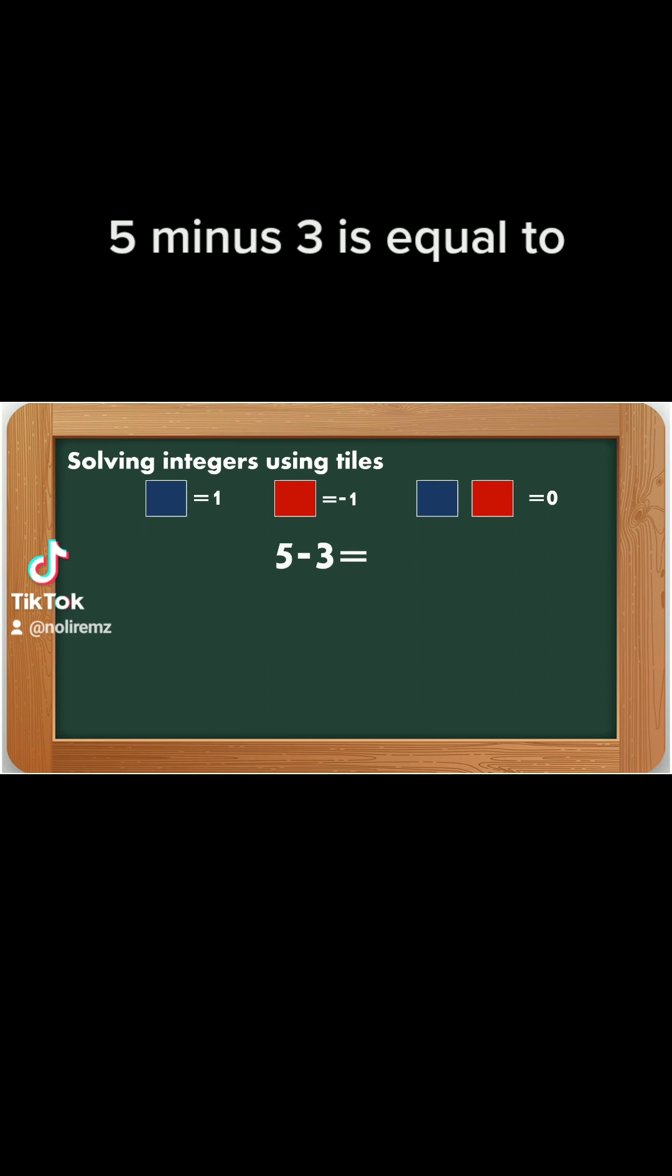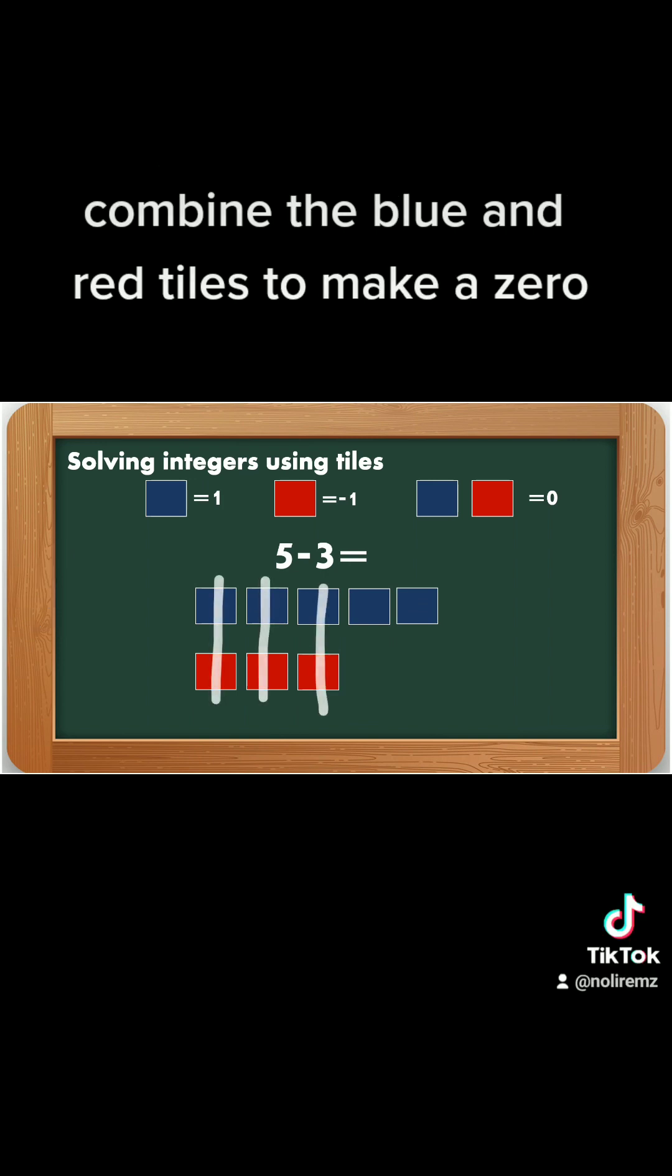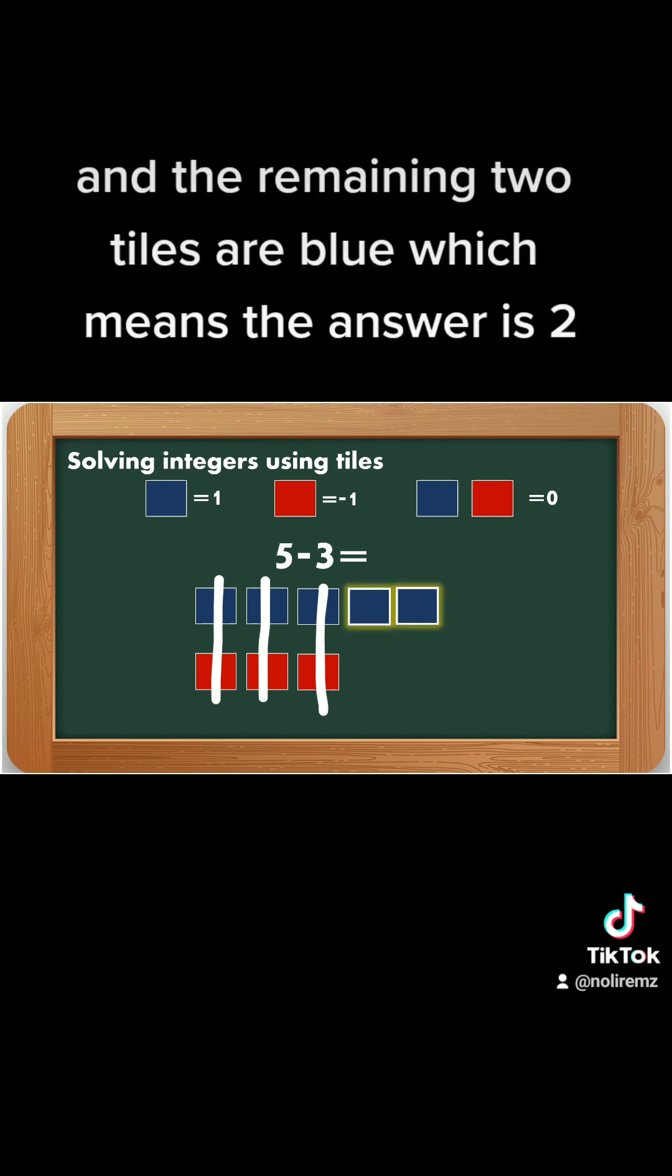5 minus 3 is equal to... In this problem, we have 5 blue tiles and 3 red tiles. Combine the blue and red tiles to make 0. The remaining 2 tiles are blue which means the answer is 2.